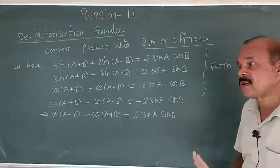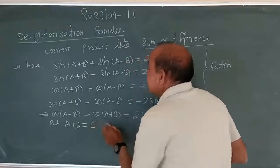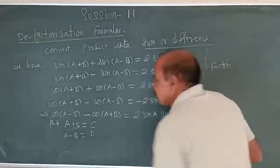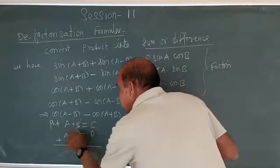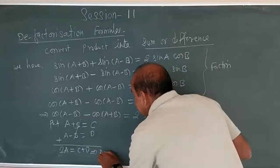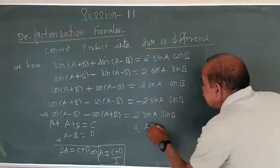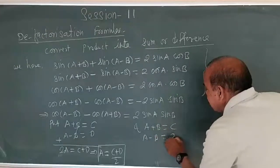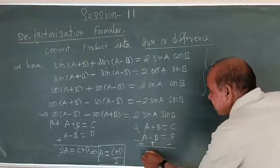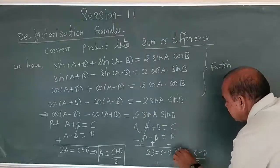This is the de-factorization formula. This is how to do it. Put A plus B equal to C — understand what value C is. And A minus B equal to D — understand what D is. Then on addition, plus B minus B cancels. So 2A equals C plus D, therefore A equals C plus D upon 2. Similarly, on subtraction, plus A minus A cancels, and B plus B gives 2B, so 2B equals C minus D, and B equals C minus D upon 2.